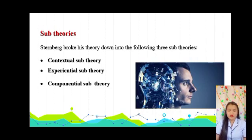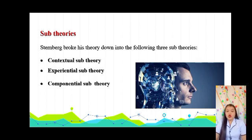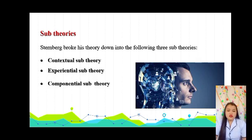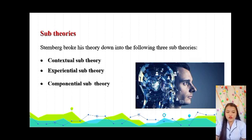Sternberg broke his theory down into the following three sub-theories: the Contextual sub-theory, the Experiential sub-theory, and the Componential sub-theory. The Contextual sub-theory says that intelligence is intertwined with the individual's environment. The Experiential sub-theory proposes that there is a continuum of experience from novelty to automation to which intelligence can be applied.